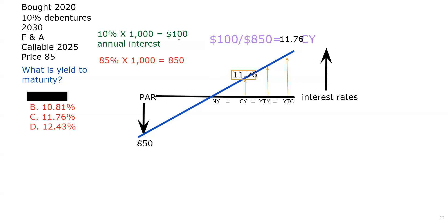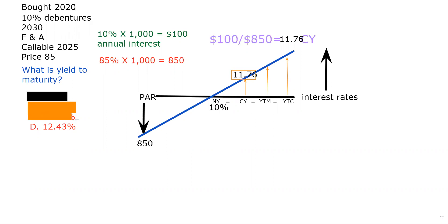I can now eliminate choice B because I know that 10% is below this — the nominal yield — and I know the yield to maturity has got to be something higher than 11.76%. So by process of elimination, choice B is no longer available to me. I just did C, which was the current yield. That leaves me with the correct answer, which is D.